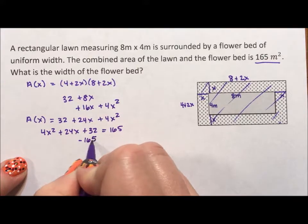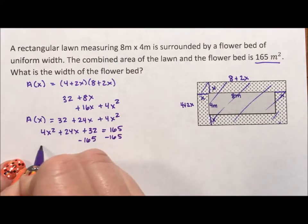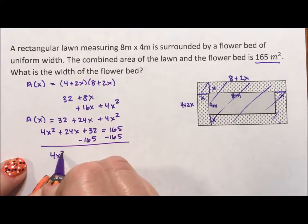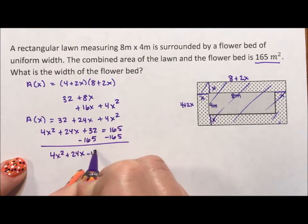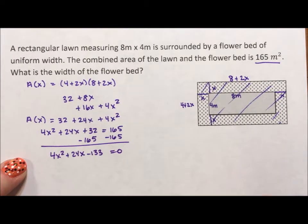Then I'm going to subtract the 165 from both sides. And I get 4x squared plus 24x minus 133 equals 0.